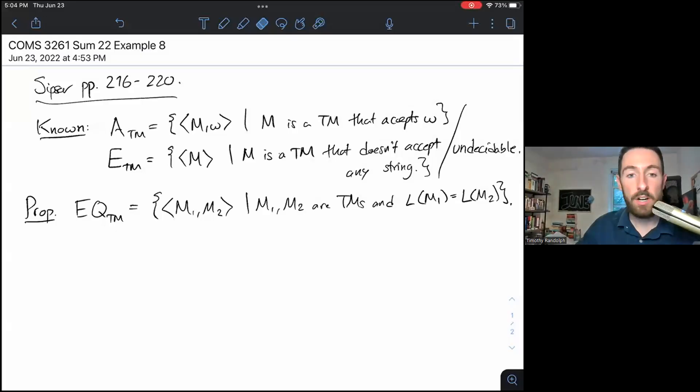All right, welcome back to what might be our last review or example video of the semester. This is example eight. We're going to be talking about showing that languages are either undecidable or unrecognizable by Turing machines via reduction, showing that if we could decide these languages, we could decide other languages that we know cannot be decided. This is a companion video to lecture 10, and it corresponds to material on pages 216 to 220 of Sipser. So let's get started.